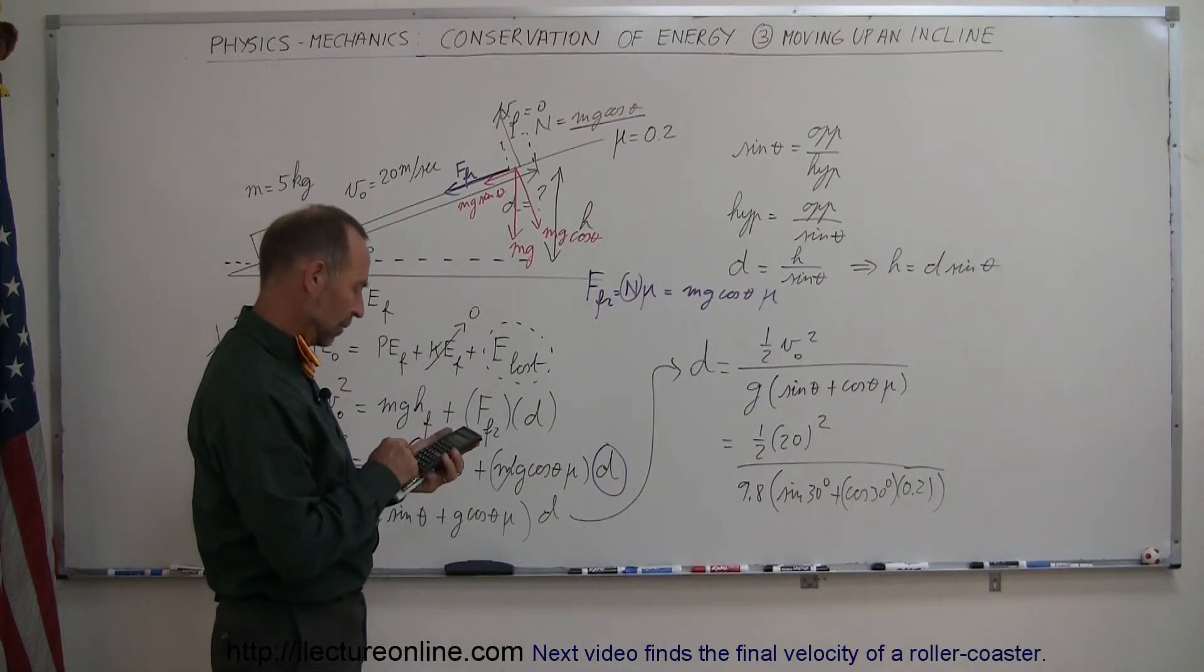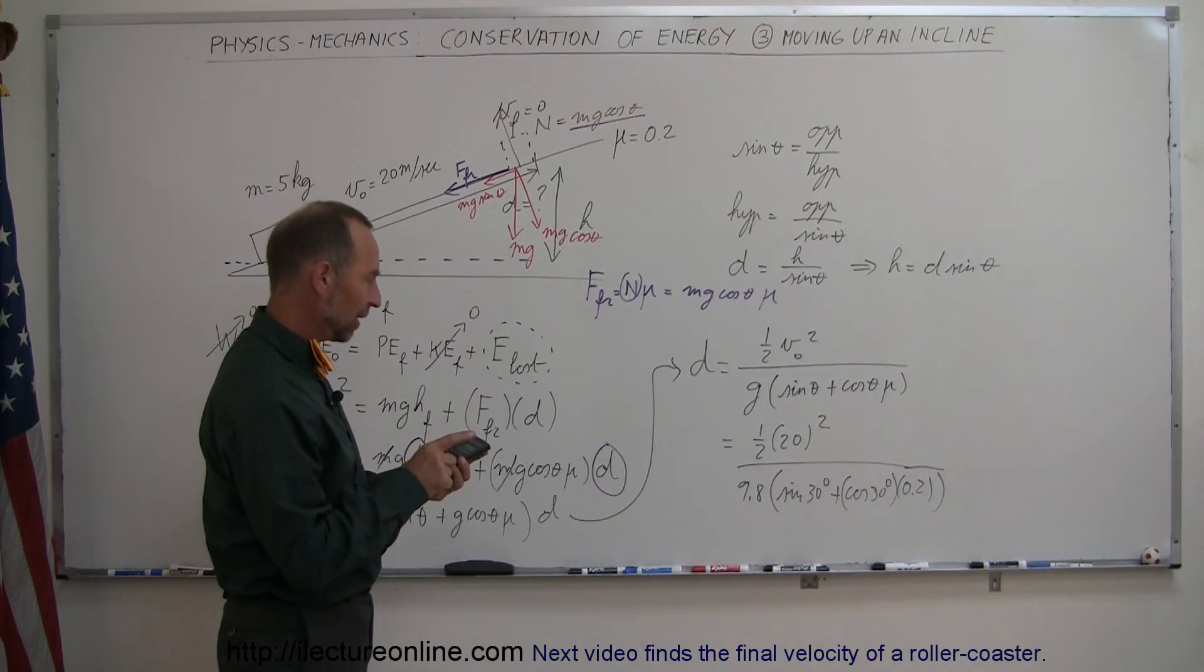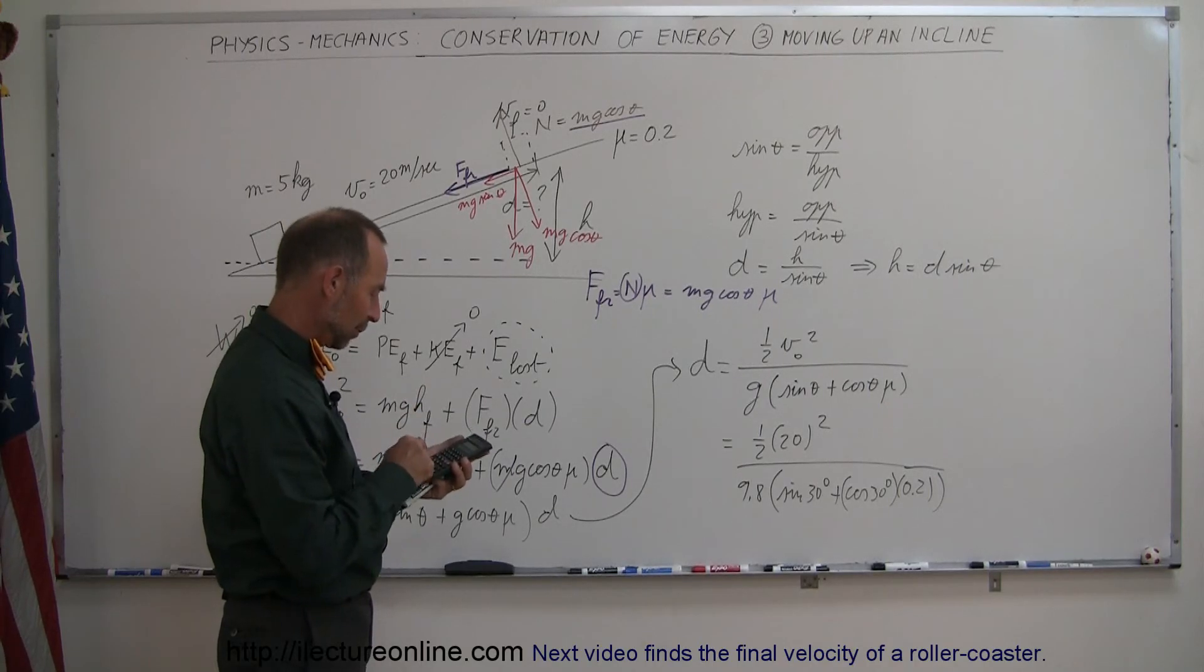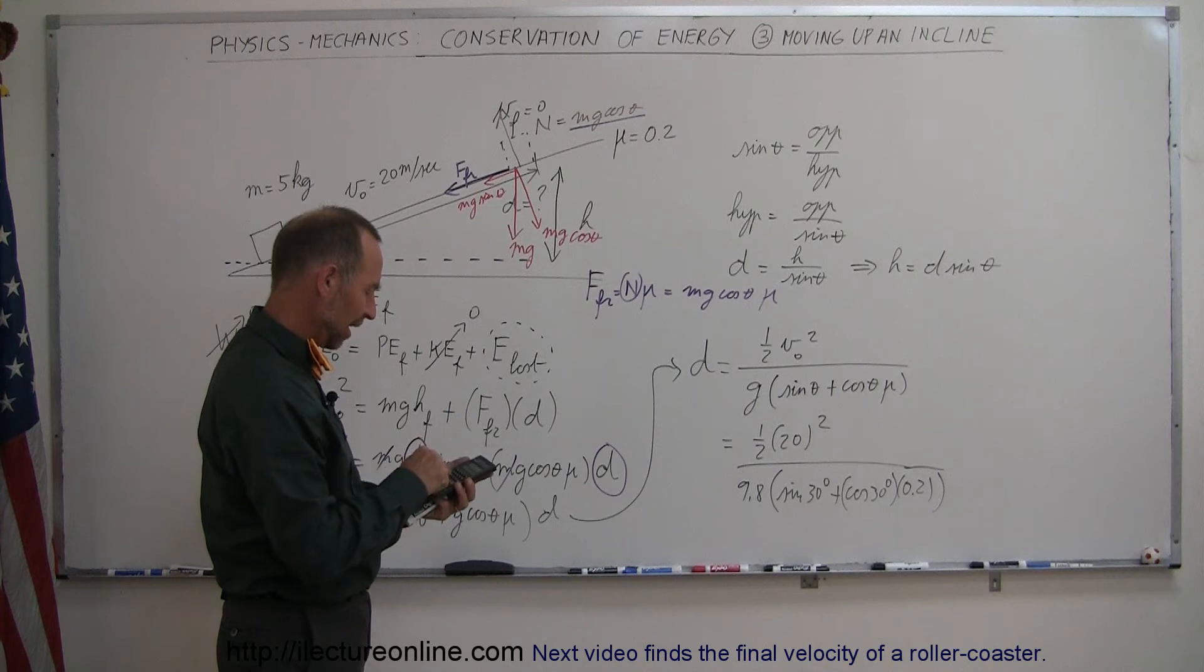And now with a calculator we can figure out what that is equal to. So we take 30, take the cosine of that, times 0.2, add to that the sine of 30, that's plus 0.5, then multiply it times 9.8, which is the denominator, take the inverse of that.